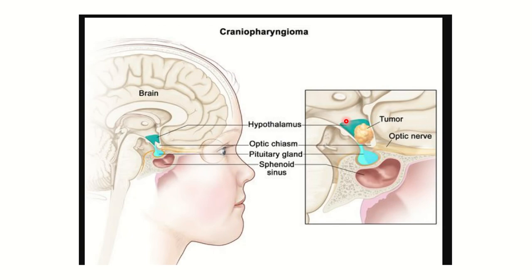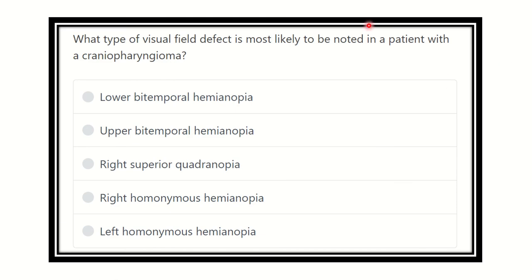Hi everyone, welcome to another question and answer session for the MRCS exam. The question is: what type of visual field effect is most likely to be noted in a patient with a craniopharyngioma? This is one of the most important questions regarding craniopharyngioma and what type of visual field effect develops.